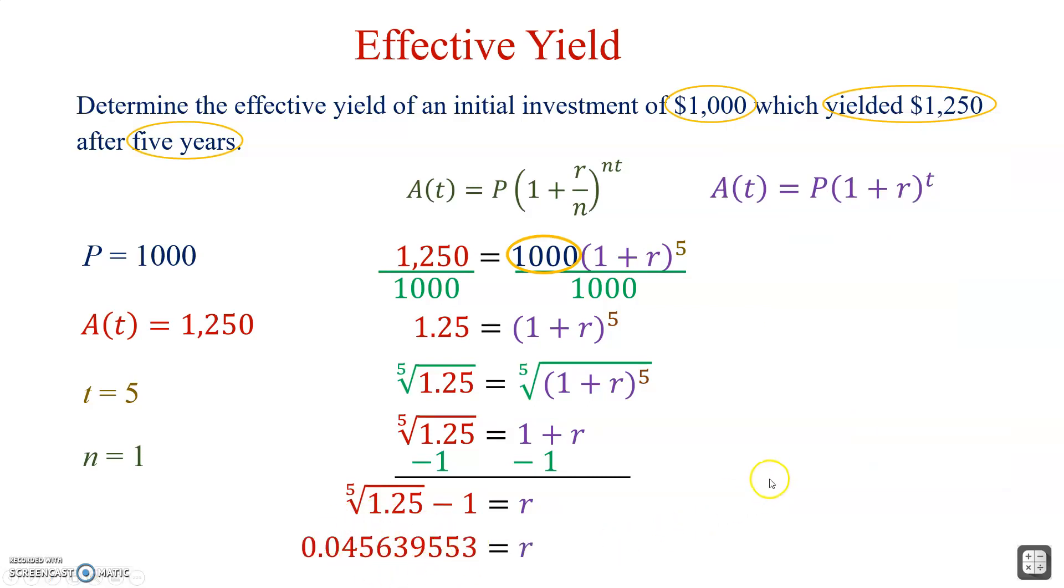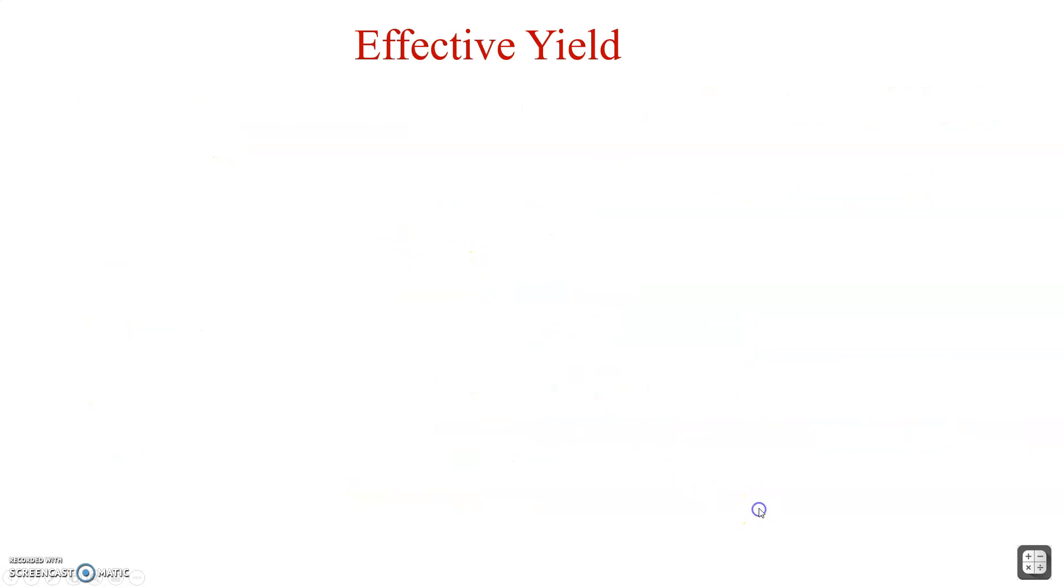We convert this to a percent by simply multiplying by 100. That will be our ultimate percent. 4.56%. This is what the calculator first gave us. We'll take this amount and to convert it to a percent, you simply multiply by 100. So, the effective yield is 4.56%. And typically, we'll round this to typically to the nearest hundredth. Unless you're told otherwise. This says if we took $1,000 and if we had an interest rate of 4.56%, after five years, effectively, we would get $1,250. Try another one.